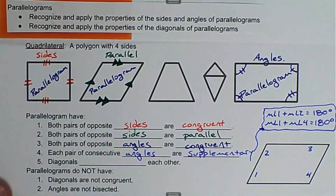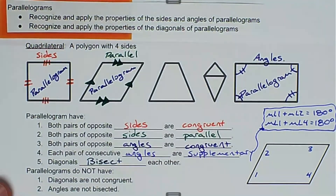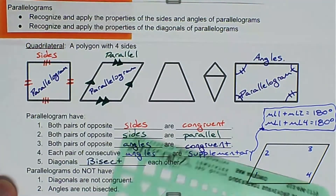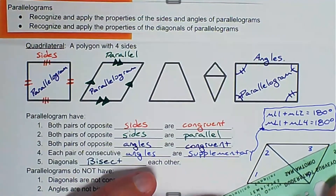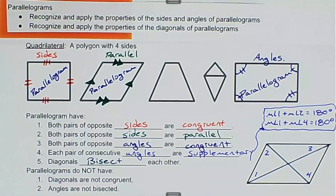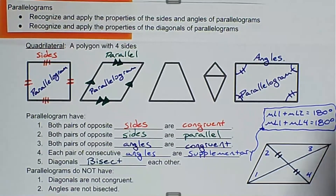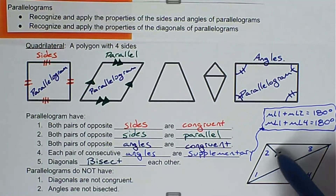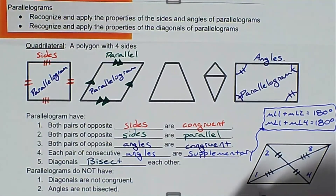The next property says diagonals bisect each other. The diagonals are the lines that connect the opposite vertices of the parallelogram. So if we draw those diagonals in, this diagonal right here bisects the other one — or cuts it in half — making two congruent parts. And the diagonal I just marked cuts the other diagonal in half as well. So this property is about diagonals bisecting each other.